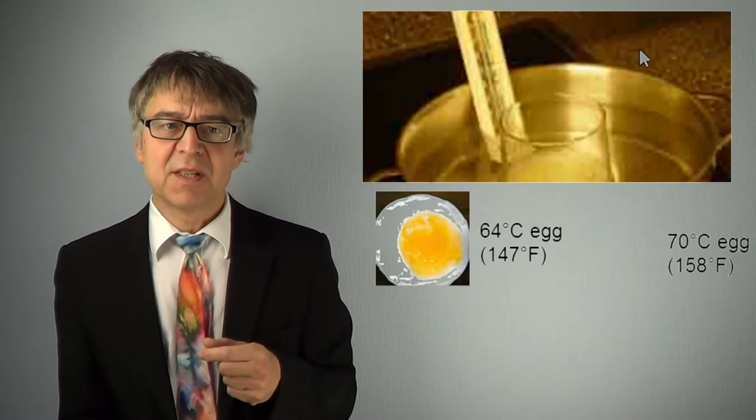If you want a perfect soft-boiled egg, prepare it at exactly 64 degrees Celsius. For a hard-boiled egg, I recommend the preparation at 70 degrees Celsius.